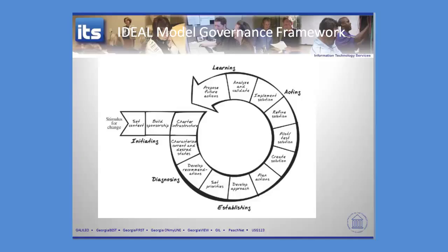That core group may include internal and external leaders, key administrative folks, and a project manager. You then need to characterize your current and desired states — which sounds like a mission and vision statement. Develop recommendations to address those states, then prioritize them, since you can't do everything. Start to develop approaches to meet those priorities, planning out the actions you'll need to take to accomplish each approach.